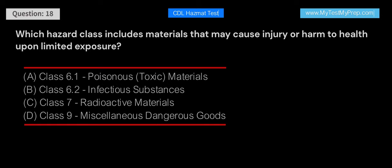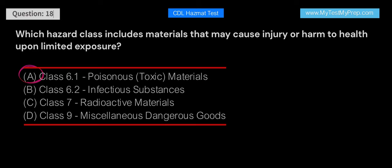Which hazard class includes materials that may cause injury or harm to health upon limited exposure? A. Class 6.1 Poisonous/Toxic Materials. B. Class 6.2 Infectious Substances. C. Class 7 Radioactive Materials. D. Class 9 Miscellaneous Dangerous Goods. Answer: A. Class 6.1 Poisonous/Toxic Materials includes substances that may cause injury or harm to health upon limited exposure. Class 6.2 includes Infectious Substances, Class 7 includes Radioactive Materials, and Class 9 includes Miscellaneous Dangerous Goods.